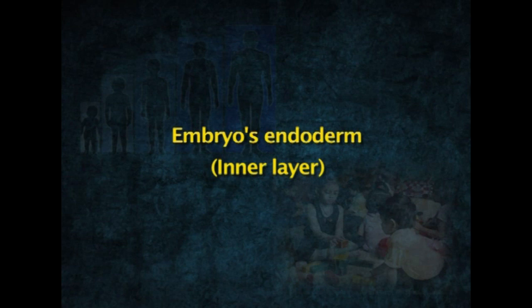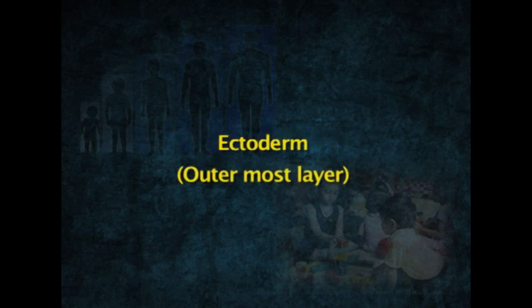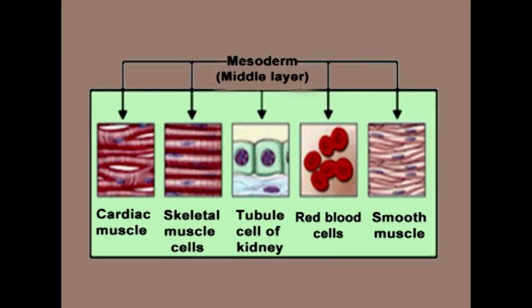The embryo's endoderm is the inner layer of cells which develops into the digestive system and respiratory system. The next layer is the ectoderm, which is the outermost layer and becomes the nervous system and sensory receptors — the ears, nose, eyes, and skin. The next layer is the mesoderm, which is the middle layer and will become the circulatory system, the bones, the muscles, the excretory system, and the reproductive system.